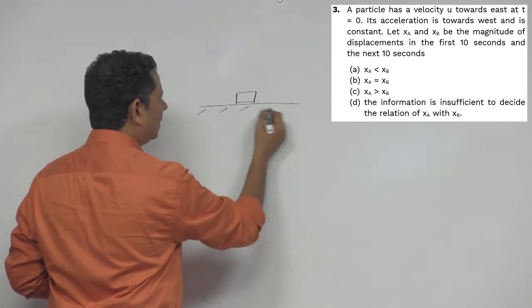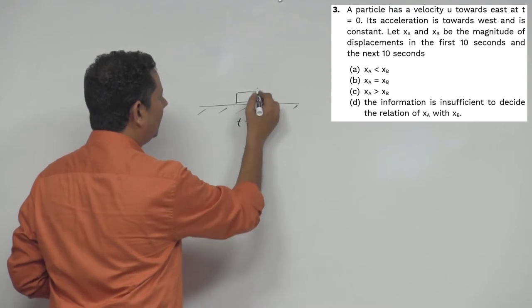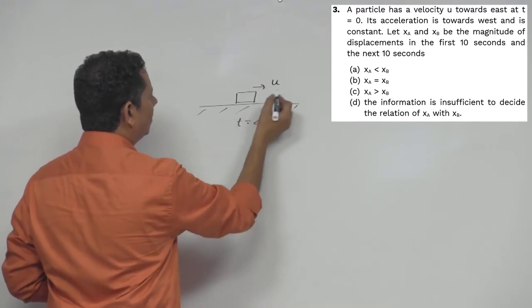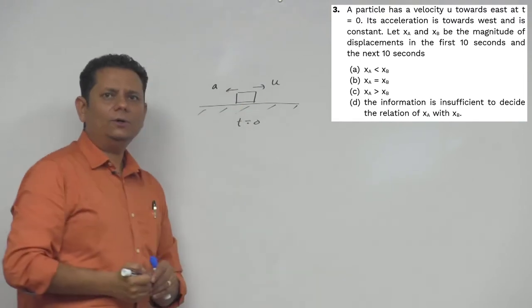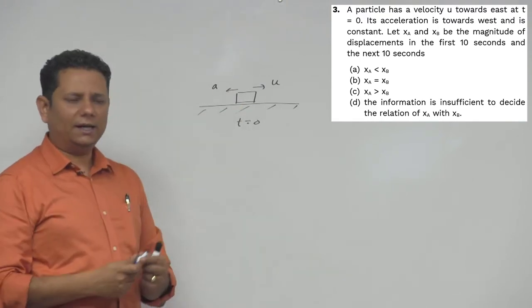This particle is here at t equals zero, and this is your initial velocity at t equals zero. And here in the backward direction you have acceleration, constant acceleration acting here.